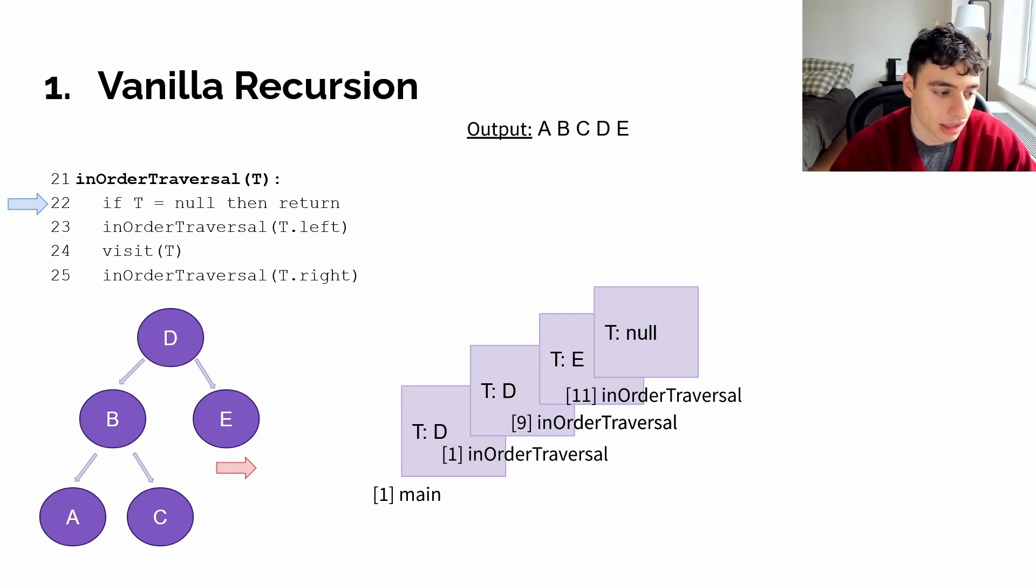Then, since frame 9 was at line 25, both frame 11 and 9 will both be popped off the stack. And also, since frame 1 was at line 25, frame 11, 9, and 1 will all be popped off the stack and we return back to the scope of our main method. Right, so that's an example of how vanilla recursion works.